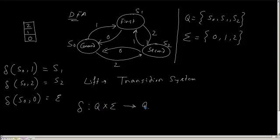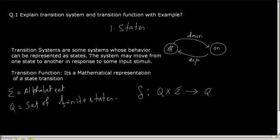In this way, we represent transitions mathematically as transition functions. The transition function delta is a mapping of the set of states and the alphabet set, and depending on the kind of automata — in this case a deterministic finite automaton — from a set of states and an alphabet set we can go to another set of states. This answers our first question: explain transition system and transition function with example.